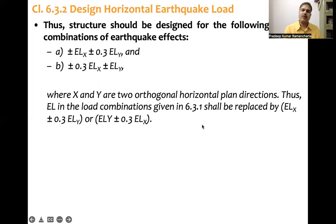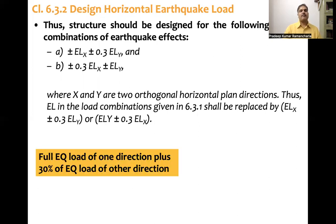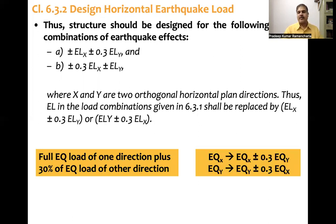When X and Y are the two orthogonal horizontal plan directions, the EL term in the load combinations given in clause 6.3.1 shall be replaced by EL-X ± 0.3·EL-Y, or EL-Y ± 0.3·EL-X. So EQ and EL refer to the same thing — earthquake load. EQ-X is earthquake load in X direction and EQ-Y (or EL-Y) is earthquake load in Y direction.